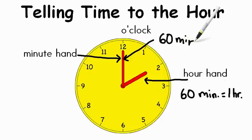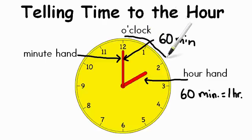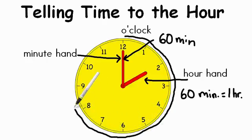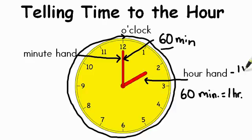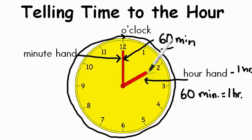So as this minute hand travels, it goes all the way around the clock. Each time that long skinny hand turns and goes around the clock, it comes back here to the 12 — 60 minutes have passed. And something happens: this hour hand has moved too. So right now the hour is at two, and if the clock has passed around completely, that hour hand will have moved from two all the way down to three. One hour, or 60 minutes, have passed by.